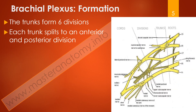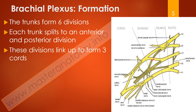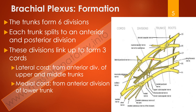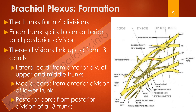We have these three trunks, each dividing into two, giving us six divisions from the three trunks — anterior and posterior divisions each — which then merge and form three cords. So three trunks, six divisions, back to three cords. The three cords are the lateral cord, the medial cord, and the posterior cord.